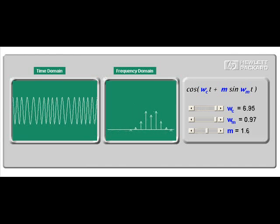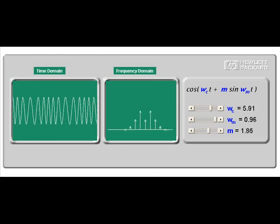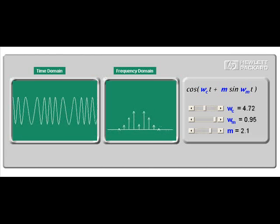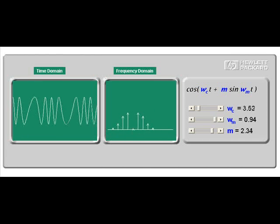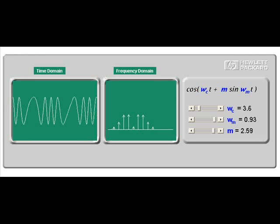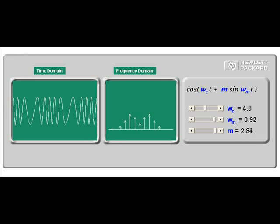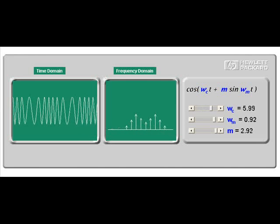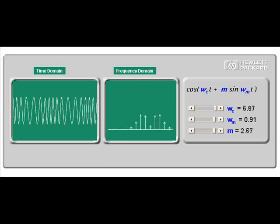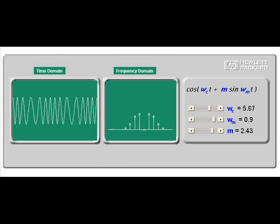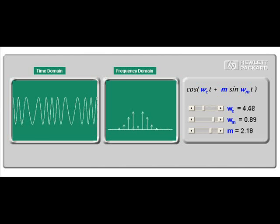In fact, the amplitude of each component is given by a Bessel function of the appropriate order. In mathematical notation, the amplitude of the sideband is j_n as a function of the modulation index, m.